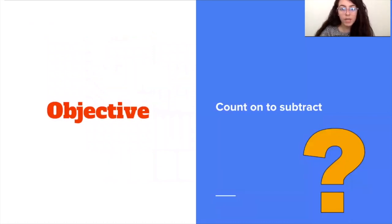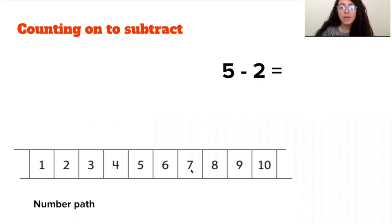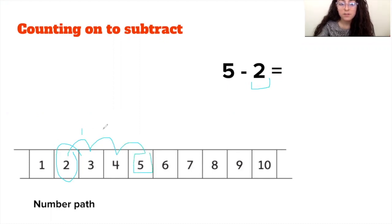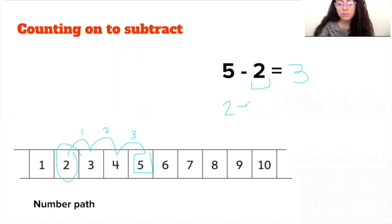So how can we count on to subtract? Say we have a problem: five minus two equals. We can do the same thing on our number path by starting with the number that we know — our add-in is two. We start with two and count on until we make it to five: one, two, three jumps. So our answer is three. We check our work by adding: two plus three equals five.